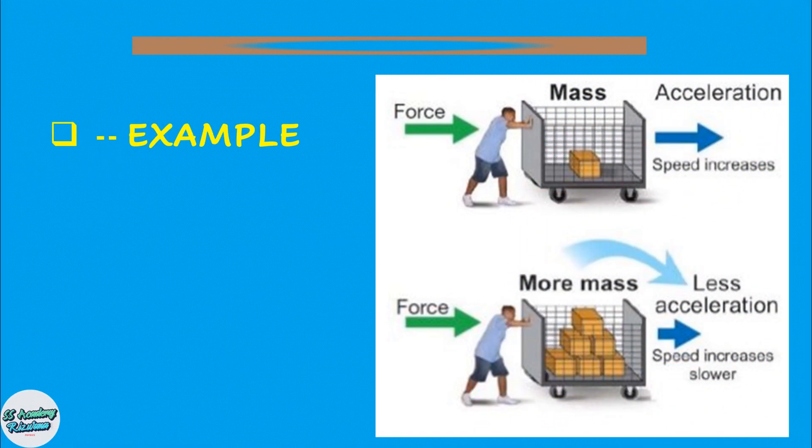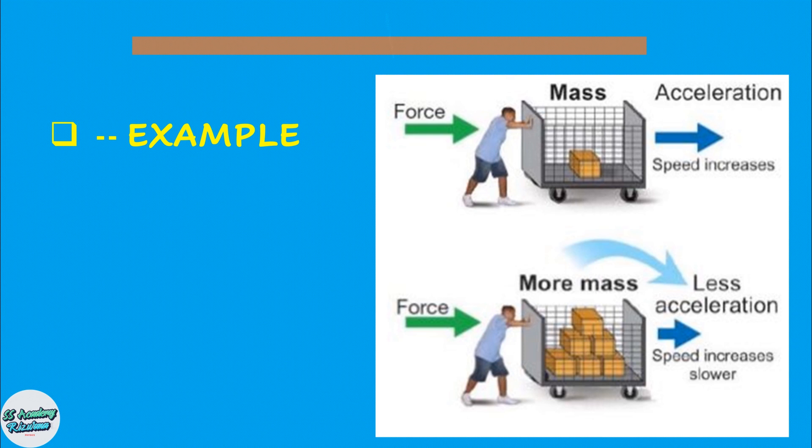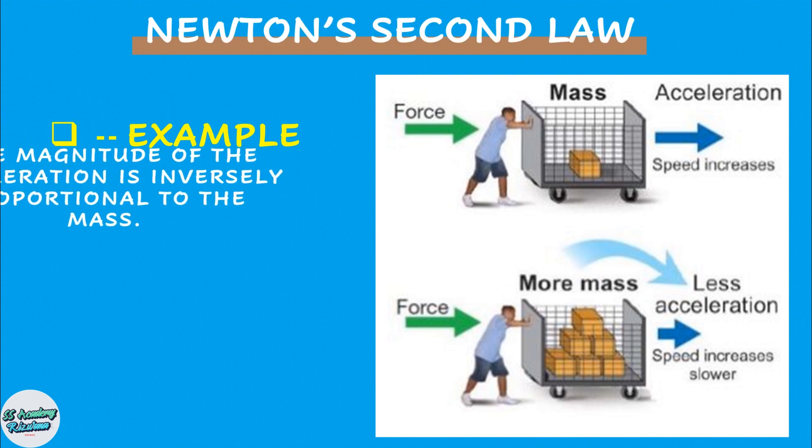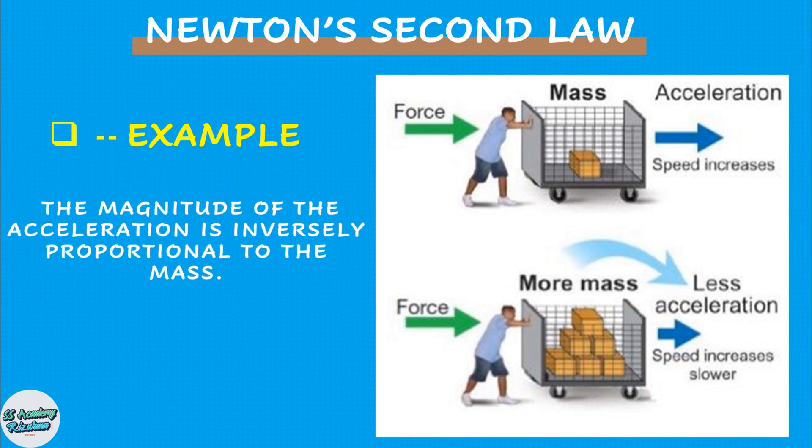I have shown this picture in a magnified view to emphasize that the magnitude of the acceleration is inversely proportional to the mass. Newton's second law of motion actually consists of two parts: acceleration is proportional to force, and secondly acceleration is inversely proportional to the mass.